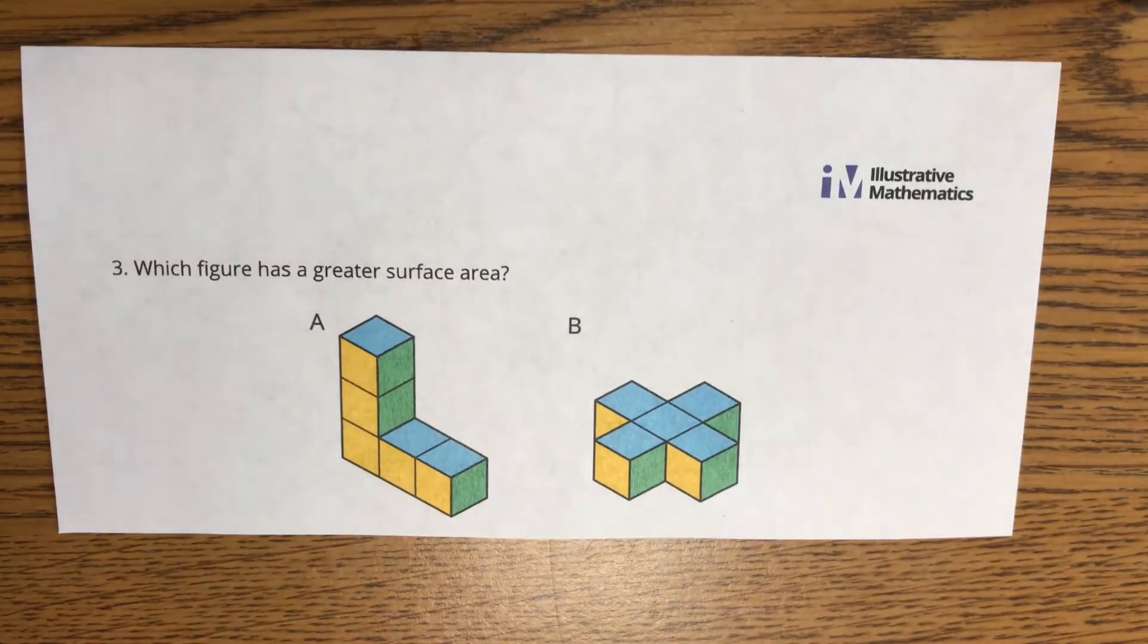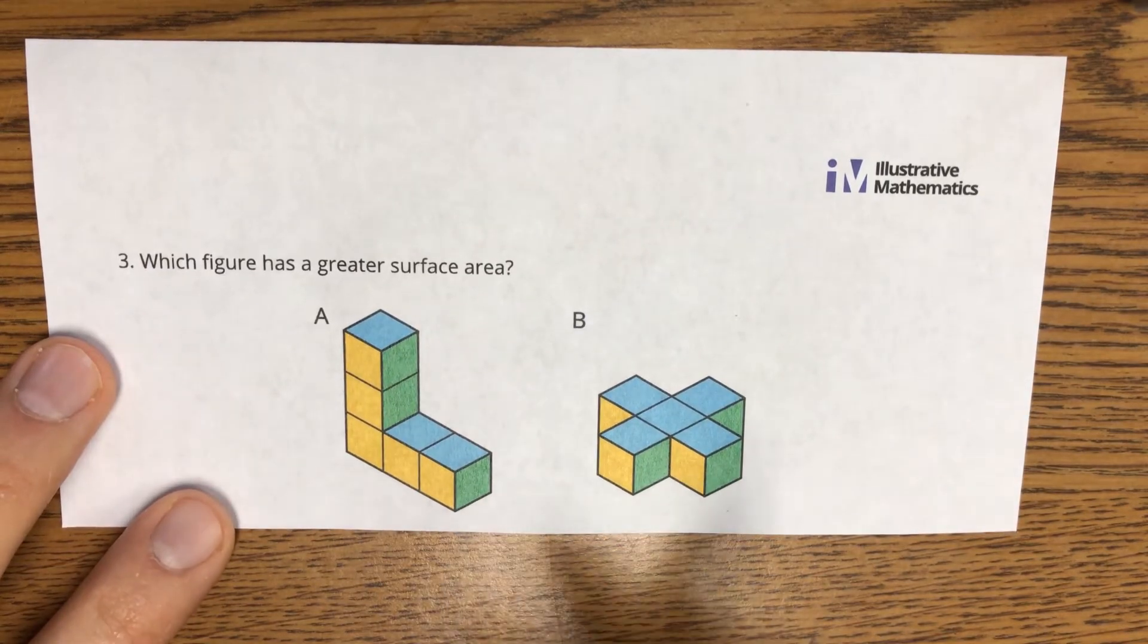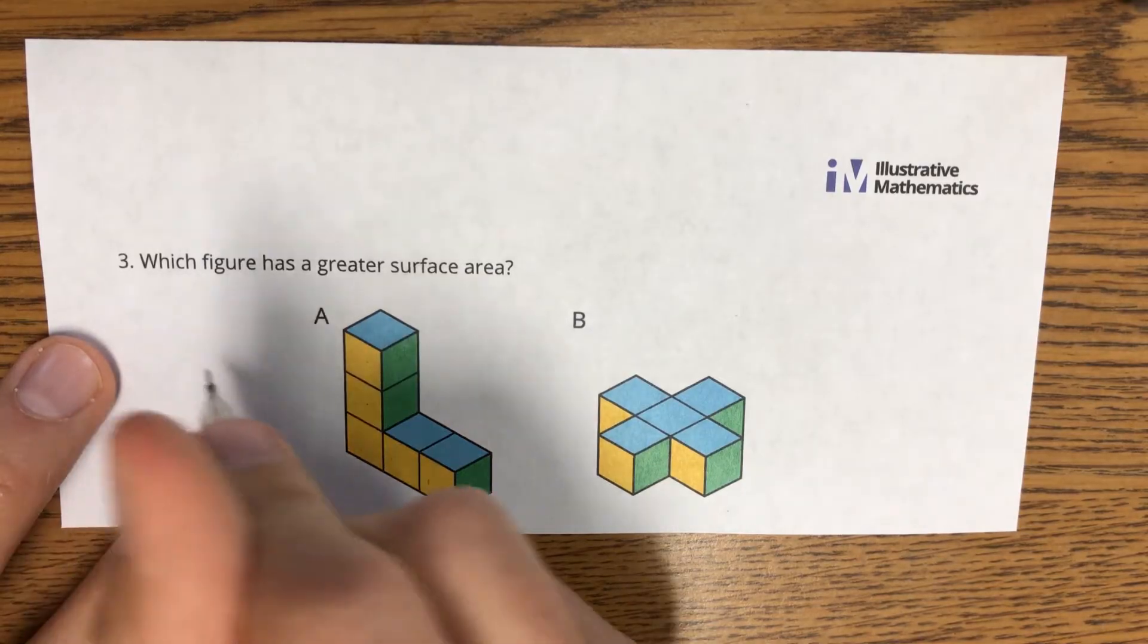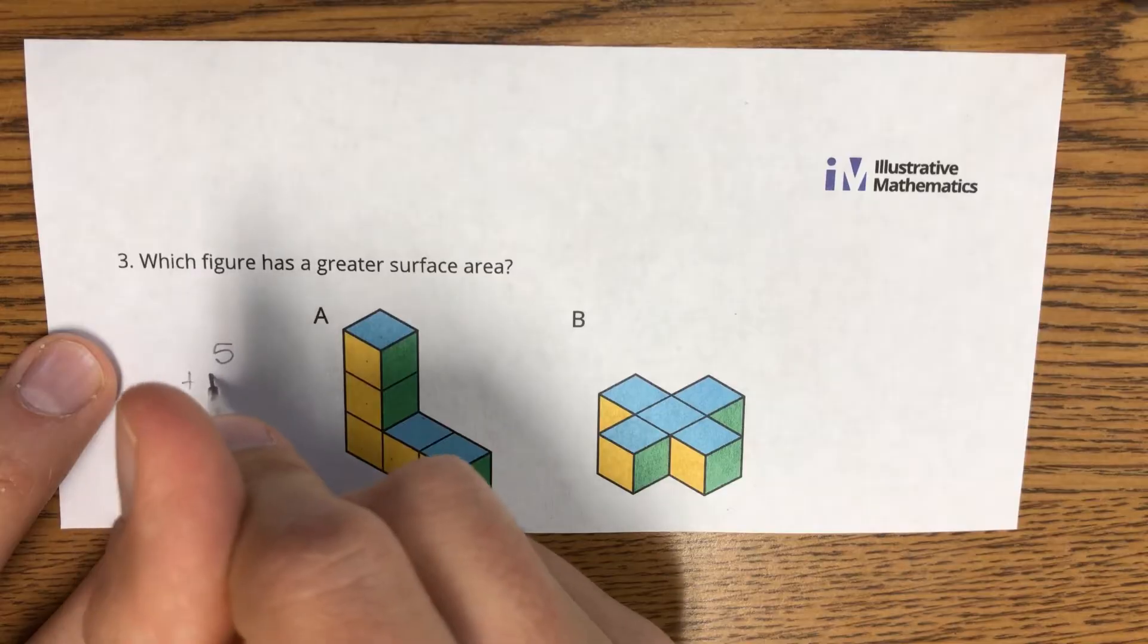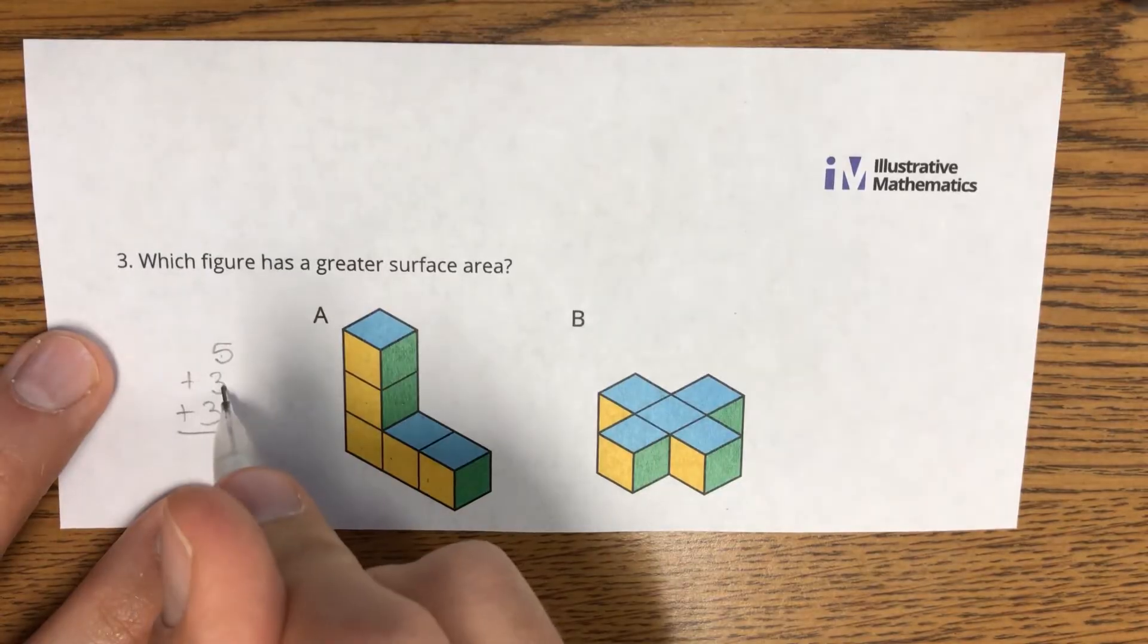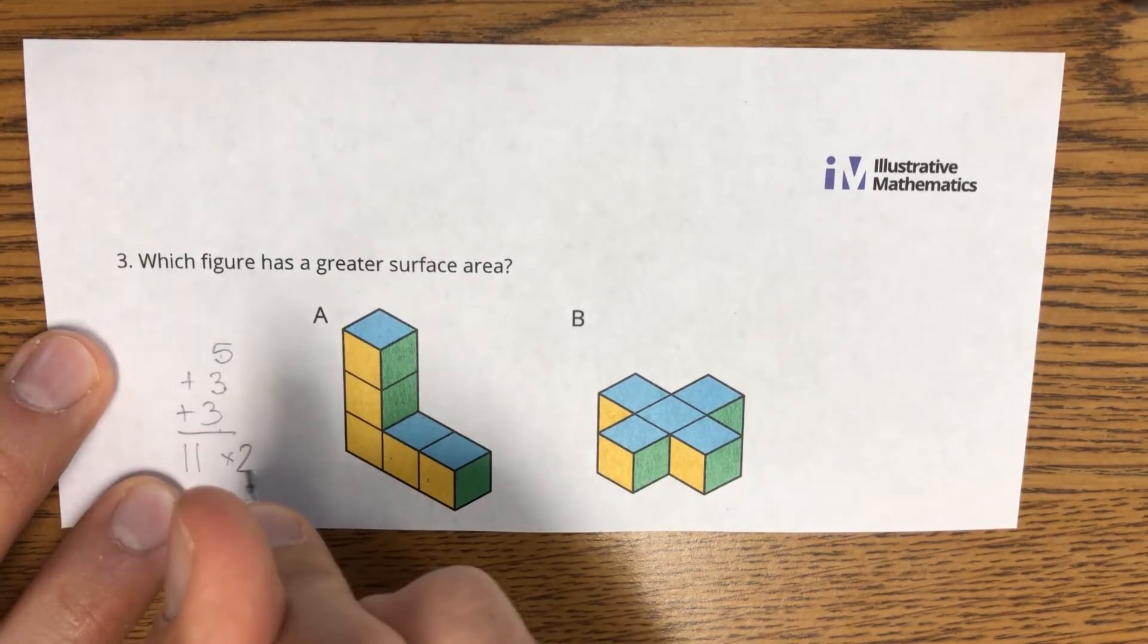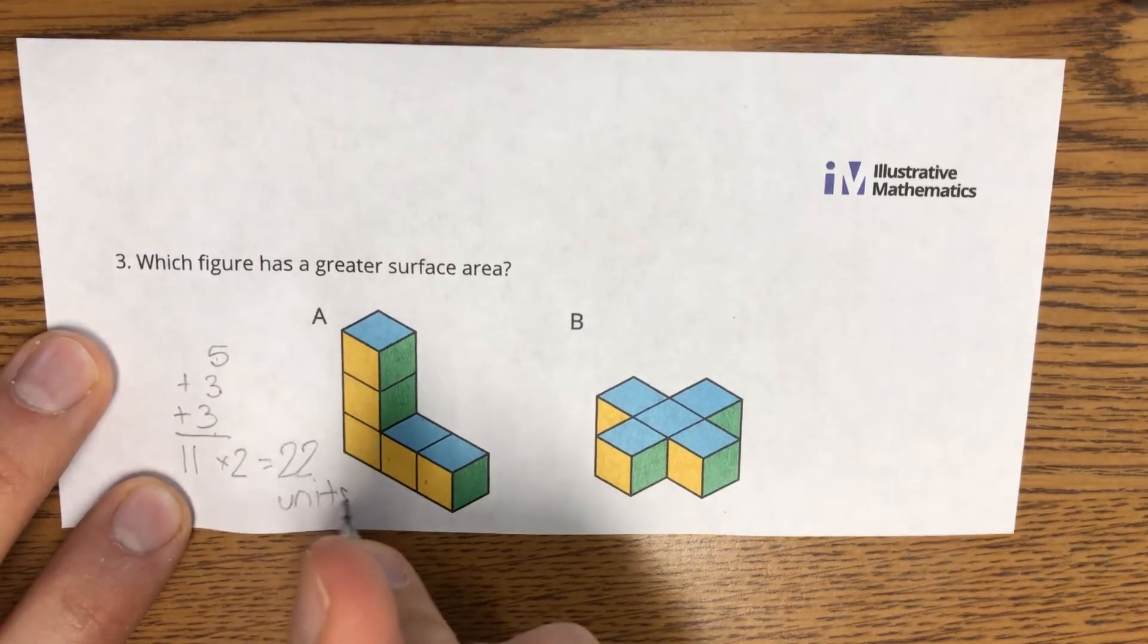In question three, we are asked which figure has the greater surface area? Well, remember we can only see half of the faces here and I like how they're colored. One, two, three, four, five for the yellow. One, two, three for the blue. One, two, three for the green, which gives us five plus three is eight plus three is 11. But we do need to multiply by two to get 22 square units for that solution.